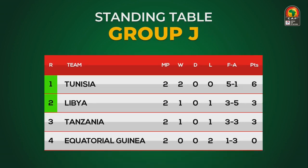In group J, the top of the table is Tunisia, followed by Libya in second, Tanzania and Equatorial Guinea below it.